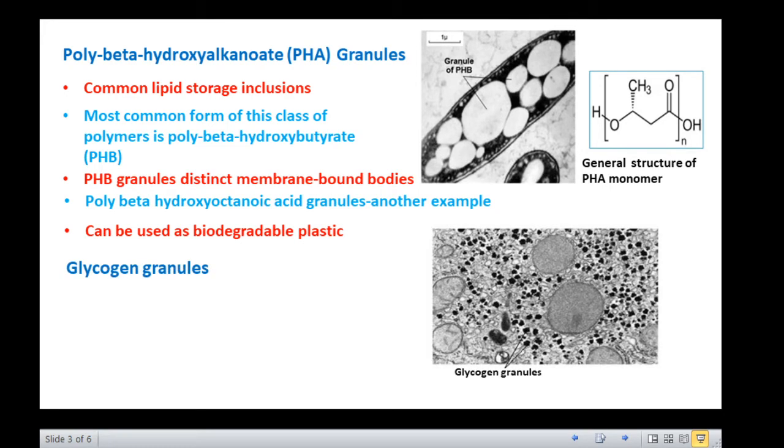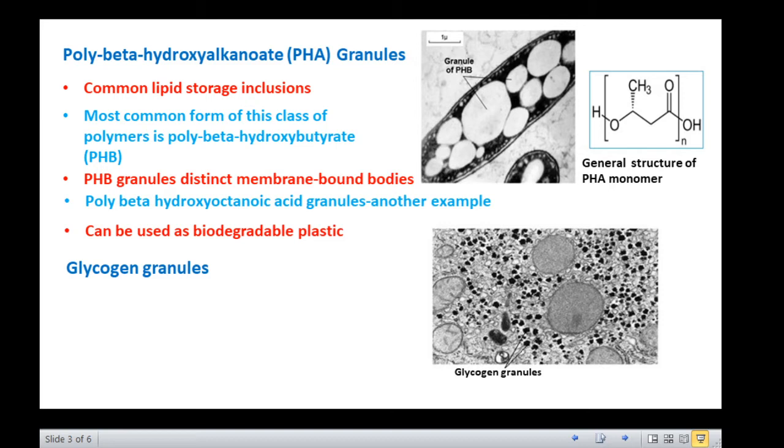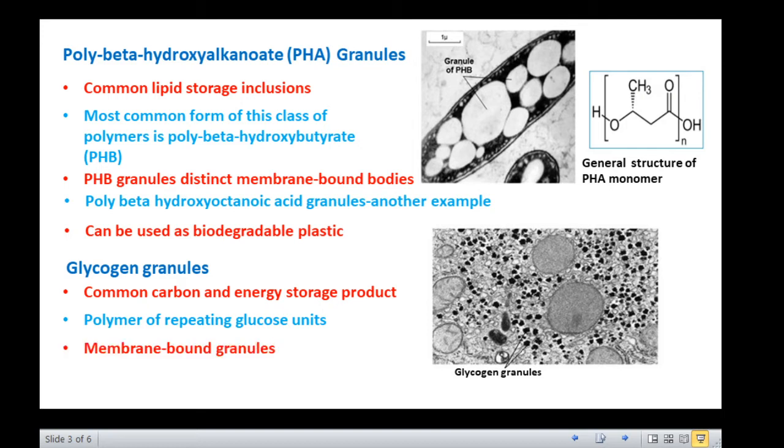The next cell inclusions are glycogen granules. Glycogen is another common carbon and energy storage product. Glycogen is a polymer of repeating glucose units composed of long chains formed by alpha-1,4 linkage and branching chains connected by alpha-1,6 linkage. Bacteria store excess glycogen in the form of membrane bound granules. When cells containing glycogen granules are treated with iodine, they become reddish brown. However, these granules are better observed under electron microscope. Many bacteria of enteric group and anaerobic spore formers like Clostridium species form glycogen granules as carbon reserve storage granules.